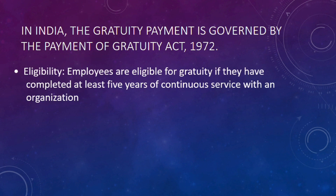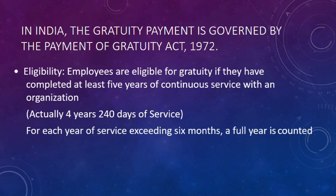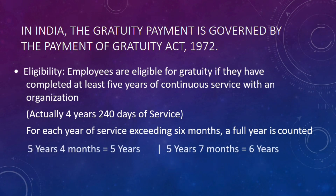Employees are eligible for Gratuity if they complete 5 years of continuous service in an organization. But actually, if the employee completes 4 years and 40 days of service in a company, he is eligible for Gratuity. After 4 years 40 days or after 5 years, if the employee works more than 6 months, it is counted as 1 year extra; if less than 6 months, it is not counted.